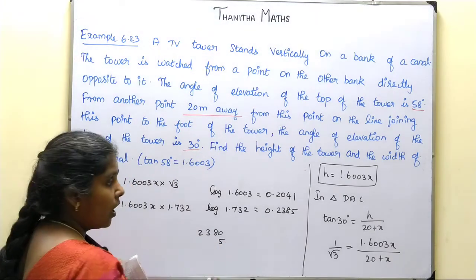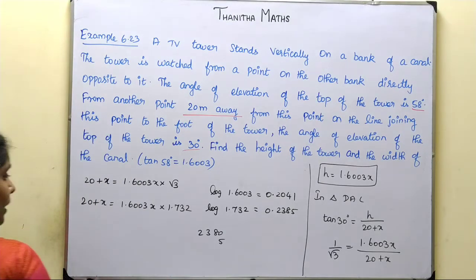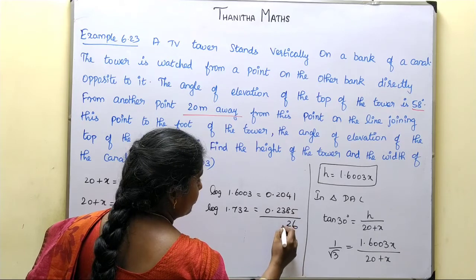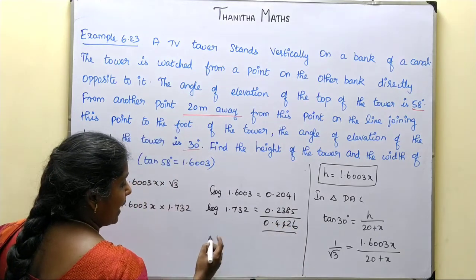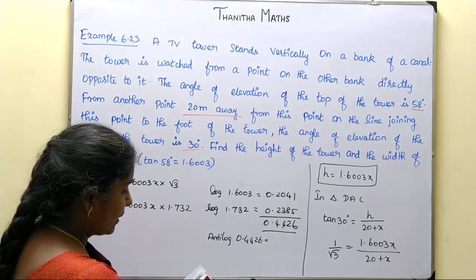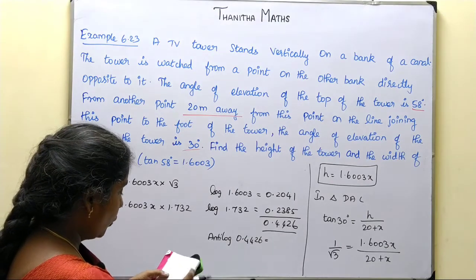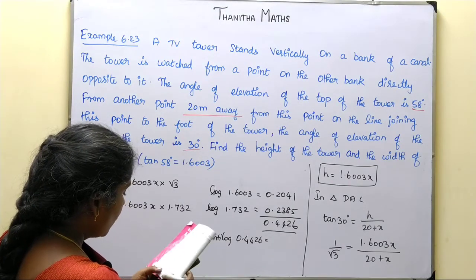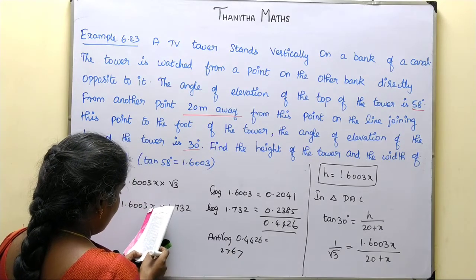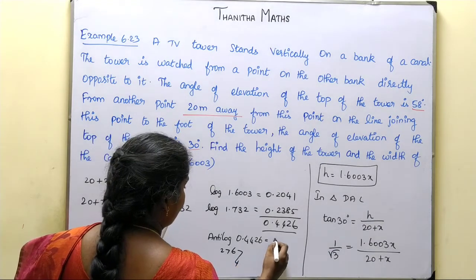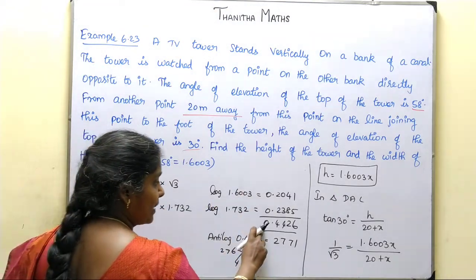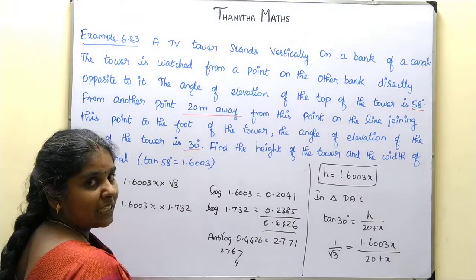Looking up the log table: the mean difference is 5, last digit to add gives 2385. Adding the log values in the product gives 0.4426. Taking antilog of 0.4426: antilog at 0.44 is 2767, mean difference 6 gives 4, so 2767 plus 4 is 2771. With 1 digit characteristic, we get 2.771. Therefore 1.6003 multiplied by 1.732 equals 2.771.